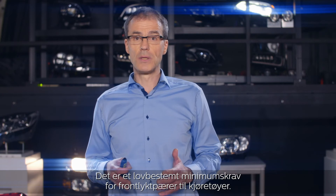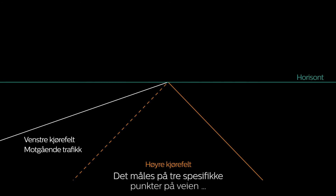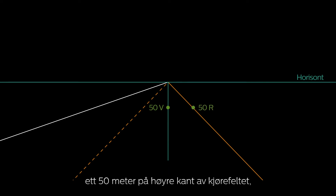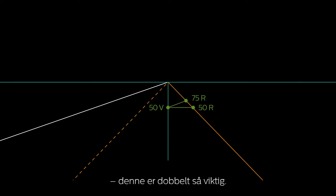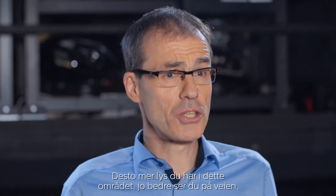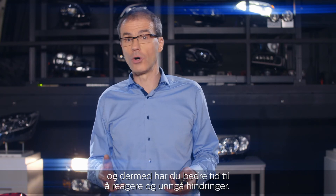There is a minimum legal requirement regarding the amount of light on the road, measured at three specific points: one at 50 meters in the center of the driving lane, one at 50 meters on the right border of the driving lane, and one at 75 meters on the right border of the driving lane — this last one carrying double weight. The formula is: 2 × 75R + 50R + 50V. The more light you have in this area, the better you'll see on the road, and thus have more time to react and avoid obstacles.